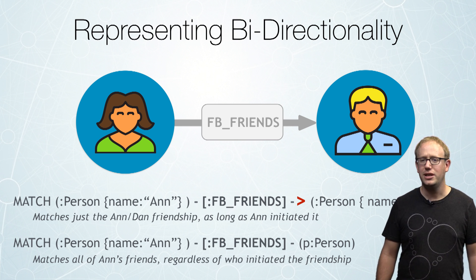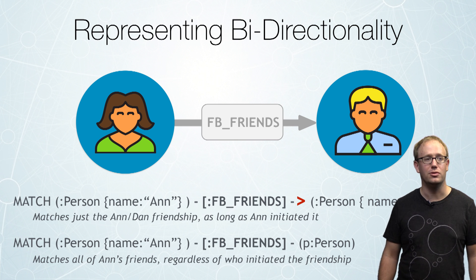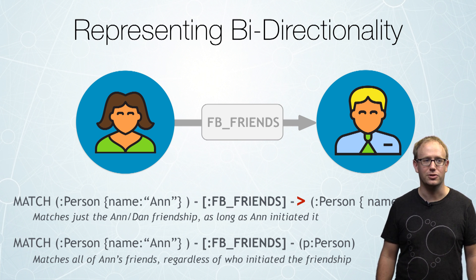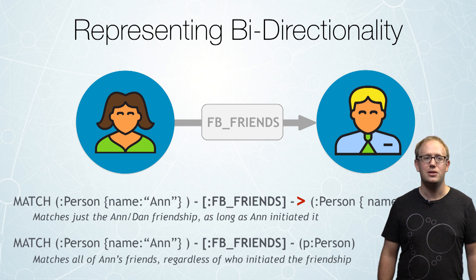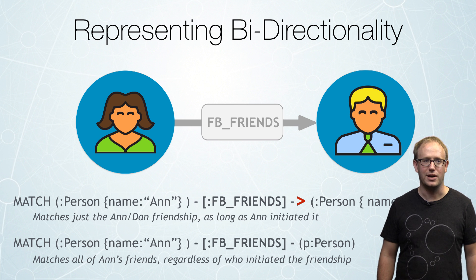The relationship always has to exist in a specific direction when you create it in Cypher, but when you query it you can match regardless of the direction.